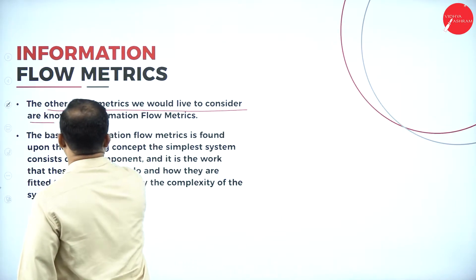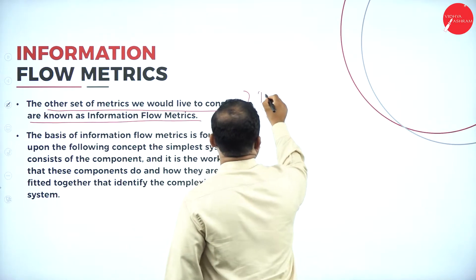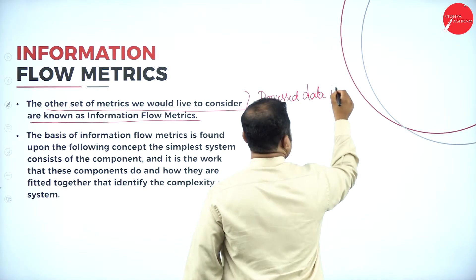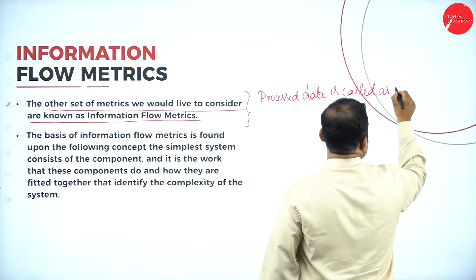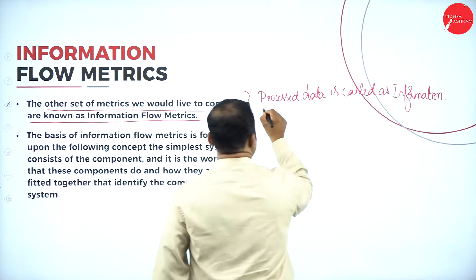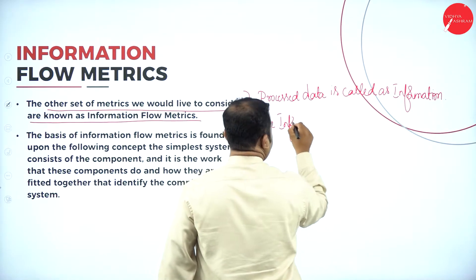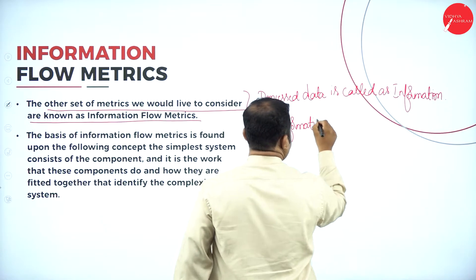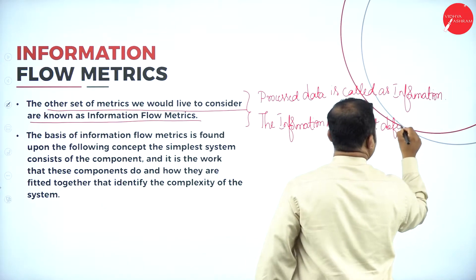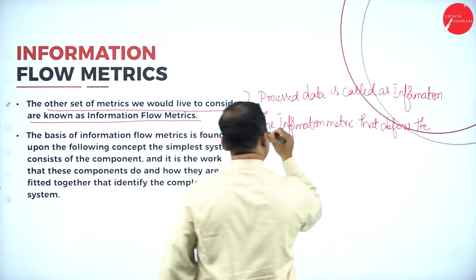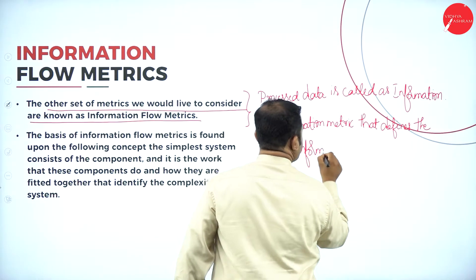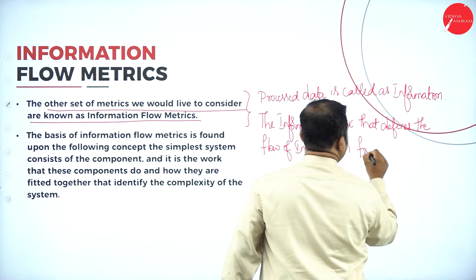The information flow matrix is going to be defined in today's session. The set of metrics we would like to consider are known as information flow matrix, also called the processor data metric — that is, the metric which defines the flow of information from one module to another module.